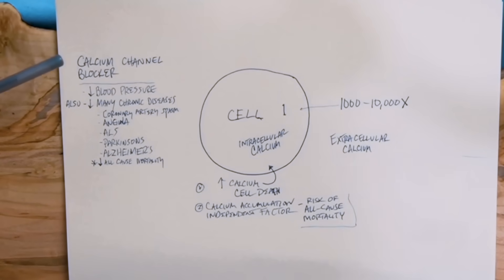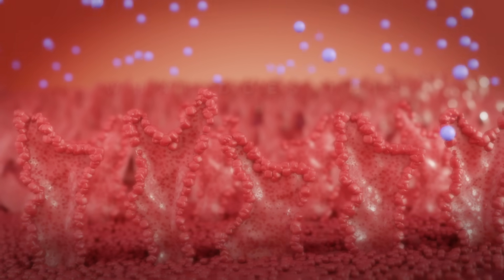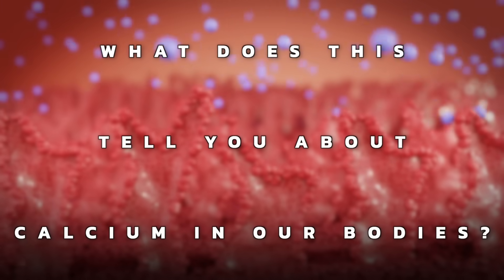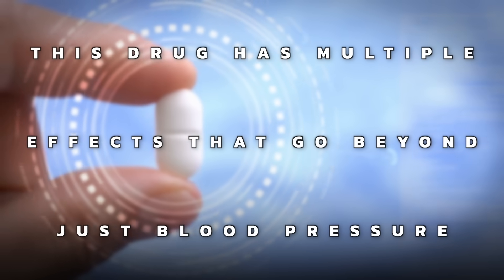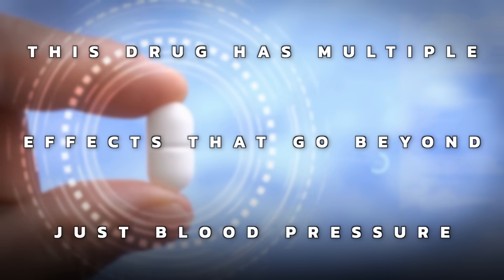It can also help improve chronic diseases, including ALS, Parkinson's, Alzheimer's. It can decrease the risk from coronary artery spasm, angina. There's one study that shows that taking calcium channel blockers decreases the risk of all-cause mortality. What does this tell you about calcium in our bodies? But the point is that this drug has multiple effects that go beyond just blood pressure, which is very interesting.